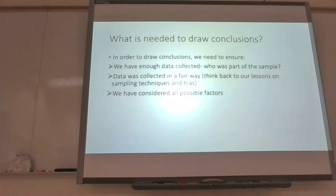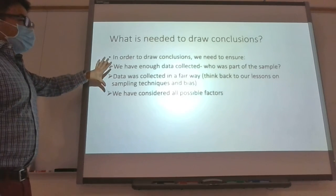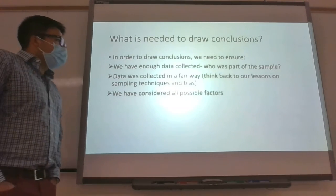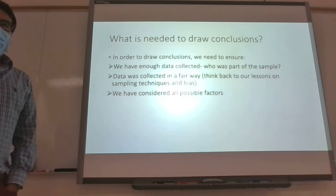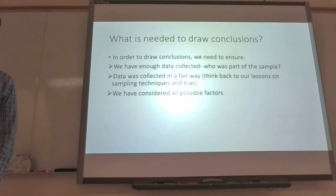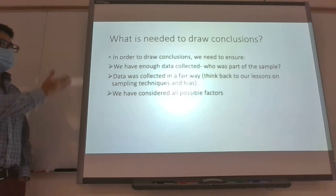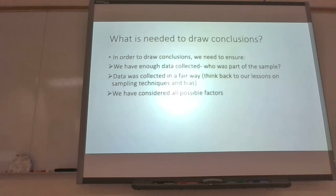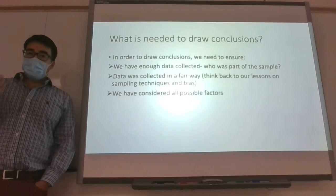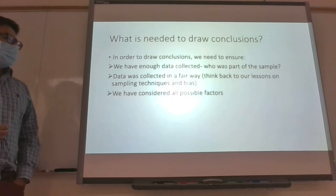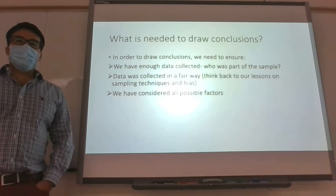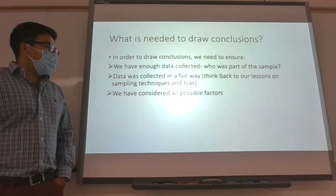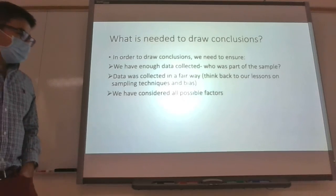So what do you need to draw good conclusions? This is the main thing to write. To draw a good conclusion, you want to make sure you have enough data collected. This goes back to what we talked about at the beginning of the course with probability — you have to do things enough times, enough trials, to draw a conclusion. You also need to know who is part of your sample, since you're not always going to have a census. And you want to make sure your data is collected in a fair way — this goes back to sampling techniques and bias.